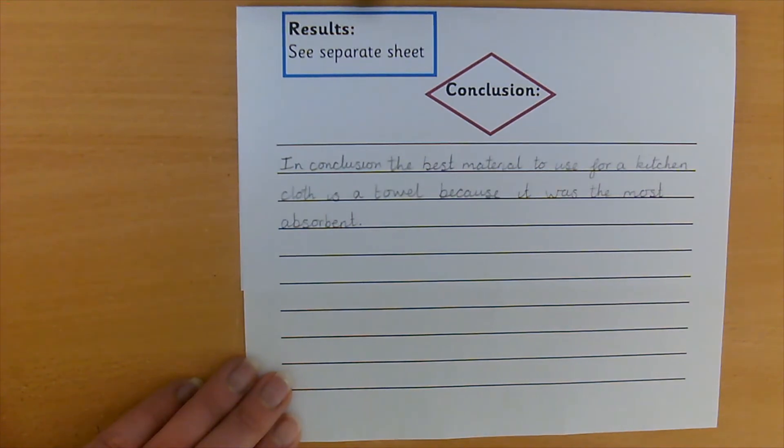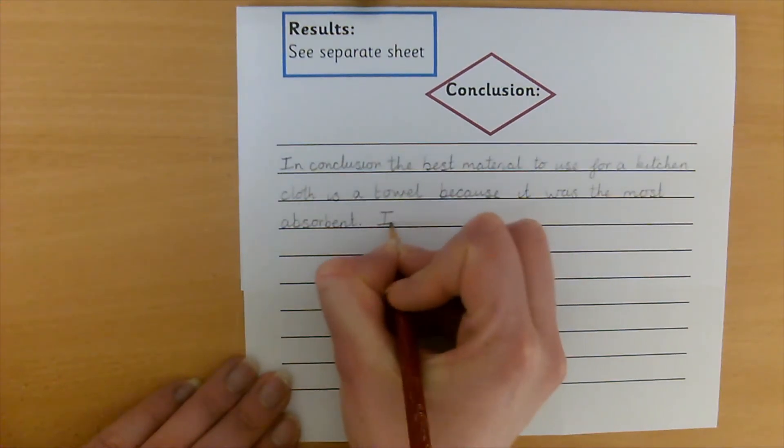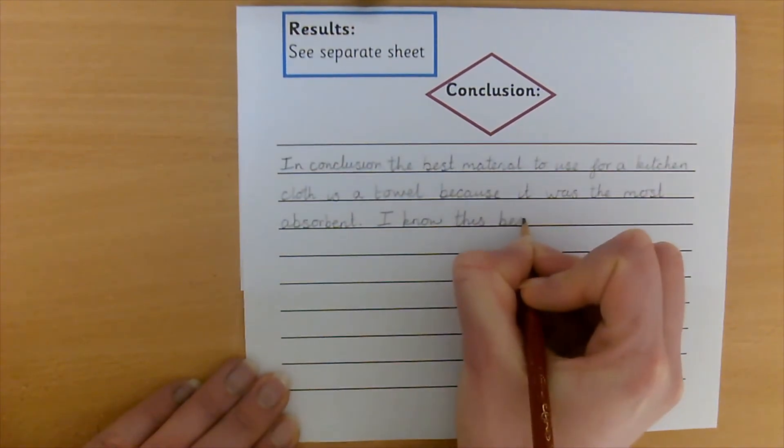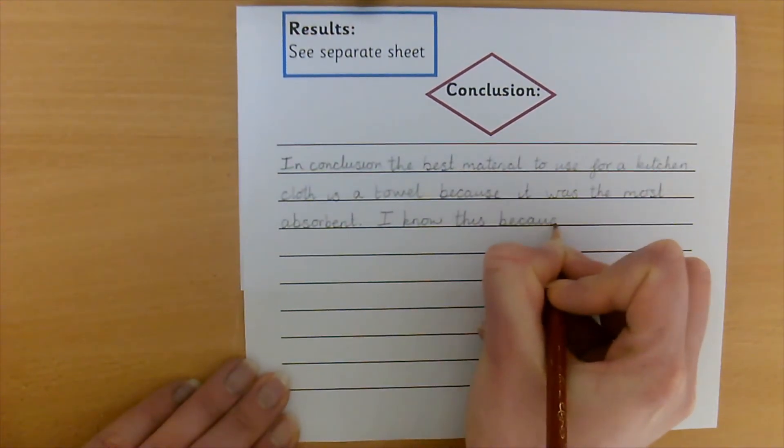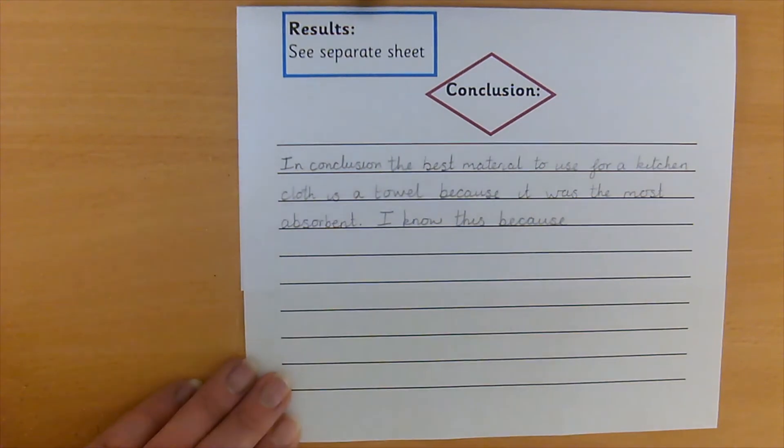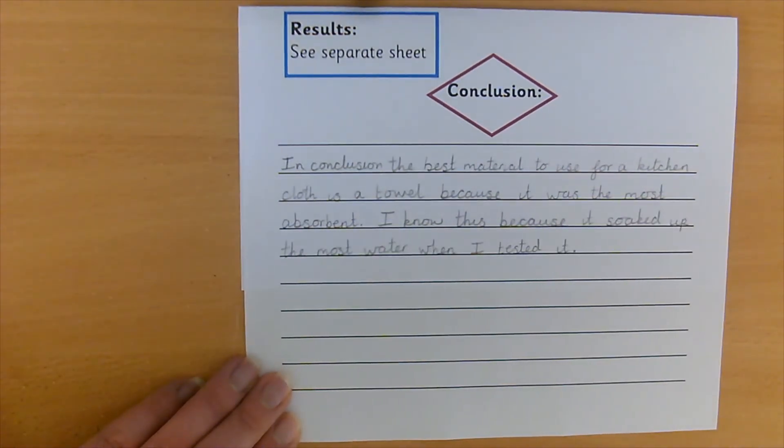So now you can write a sentence about how you know. And we know because we tested them. You carried out an investigation. So I'm going to write, I know this because. And then think about your reason. What was it about your investigation that told you that it was the most absorbent? So pause the video and finish this sentence. Welcome back. So I have written, I know this because it soaked up the most water when I tested it.